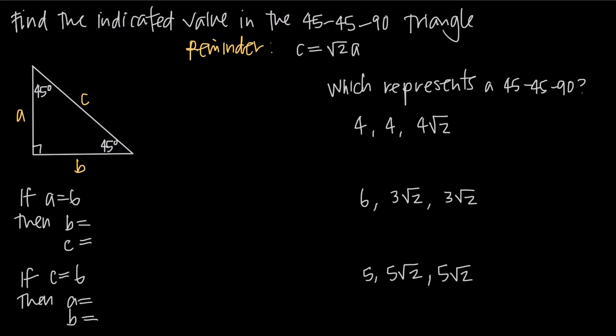In this video, we're talking about 45-45-90 triangles. When we say a 45-45-90 triangle, we're talking about a triangle that has this set of three interior angles — two of its interior angles have a 45-degree measure, and the third interior angle has a 90-degree measure.